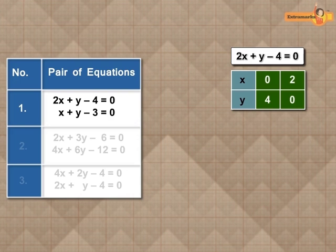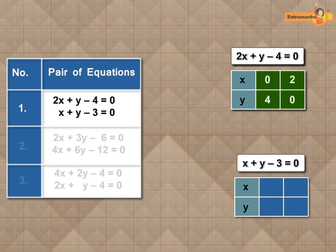In the second equation, x plus y minus 3 is equal to 0. If we consider x is equal to 0, then we get y is equal to 3. And if we consider y equals 0, then we get x is equal to 3.